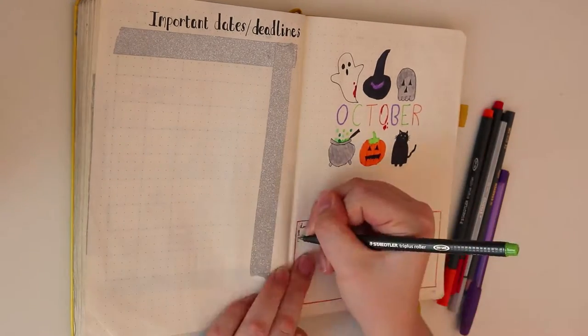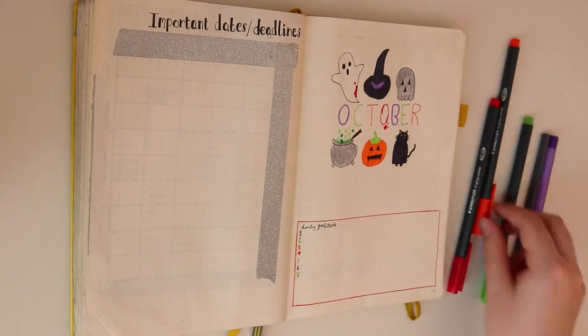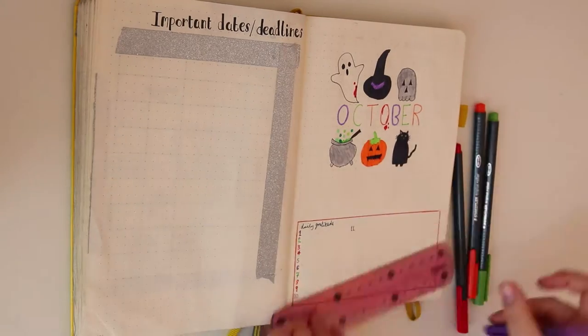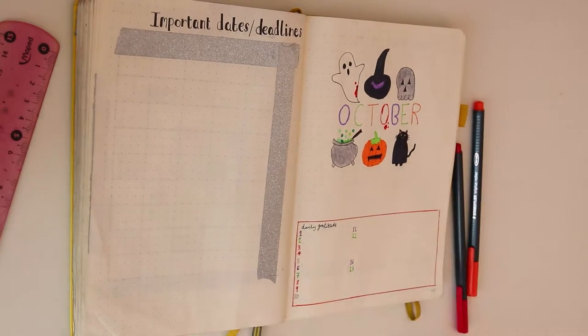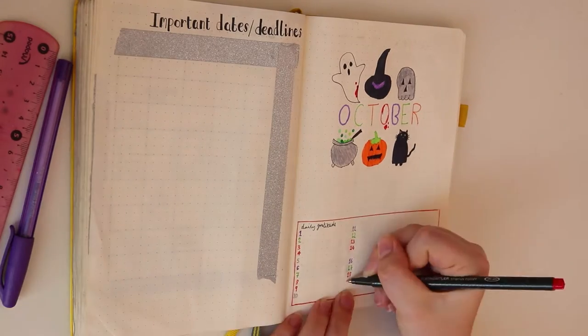Then as always I did my daily gratitude log and decided to continue with this colour theme here. If you're curious I used the Staedtler Triplus roller pens for the majority of the decoration on this page. They're really smooth as they're rollerball and the colours are really vivid.